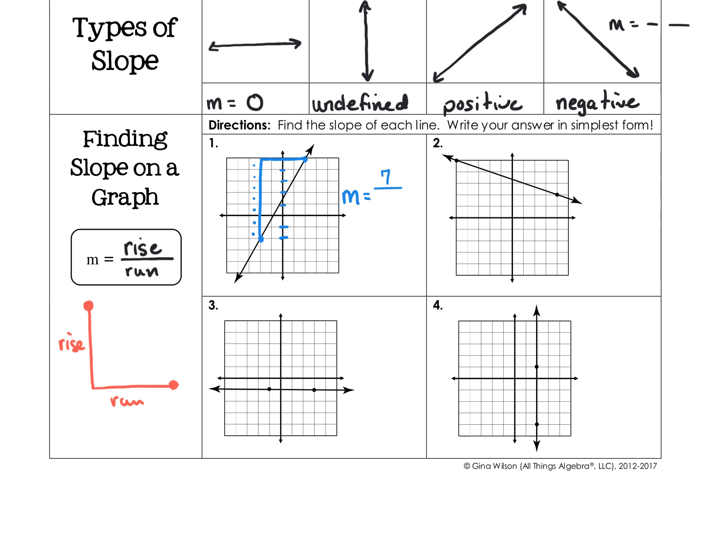Now I write the ratio: rise over run gives 7 over 4. Checking if it can be reduced — there is no common factor between 7 and 4, so the slope stays as M equals 7/4. This means from point to point, the comparison is a rise of 7 to a run of 4.